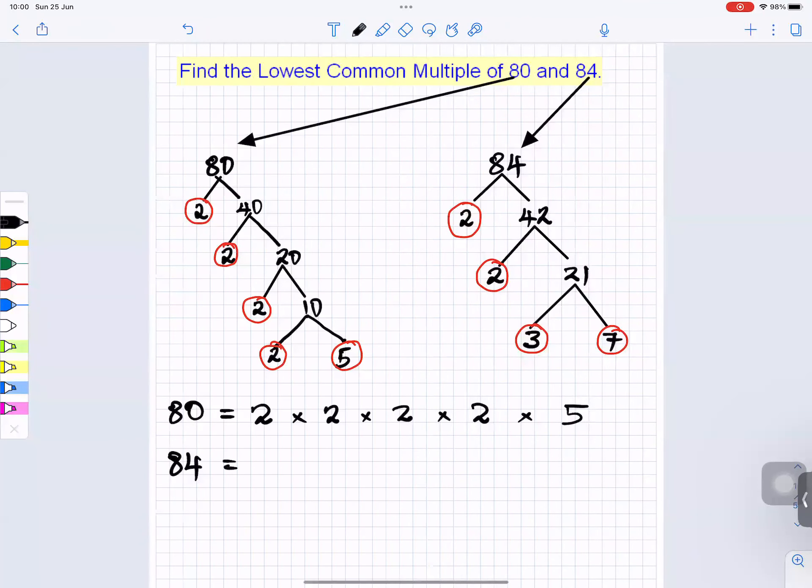Now to find what we call HCF, highest common factor, I will look for what is found in both of them. There's two there found in both of them. There's this other two found in both of them. What else is found in both of them? So I will multiply the two that is found in both of them. The two times the two—that gives four. So the highest common factor is four.